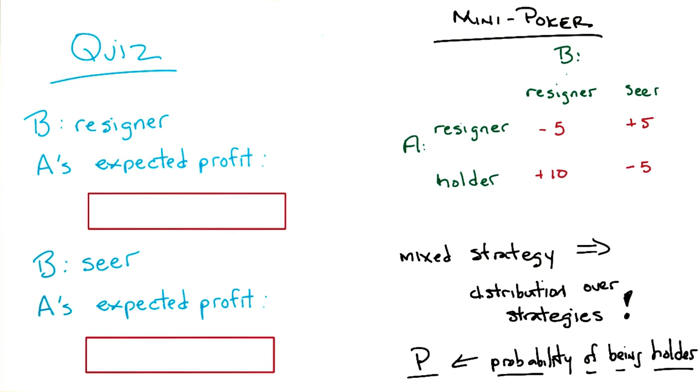So whenever P, whenever that event happens, it gets 10. And whenever the opposite of it happens, it gets minus 5. So I want to say 10P plus 1 minus P times 5.